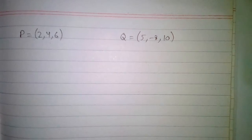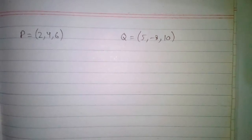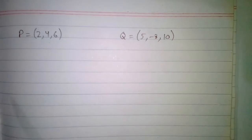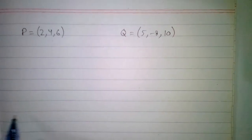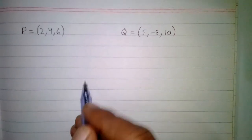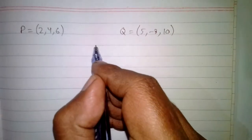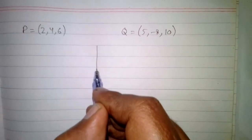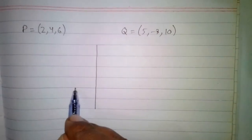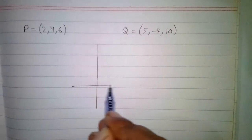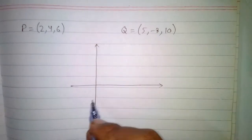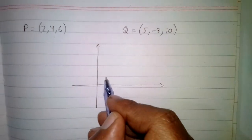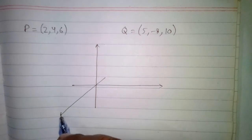In this video we are going to find out the distance between two points P and Q, and these points are in three dimensional space. First of all we will take a look at where these points are in the three dimensional space.